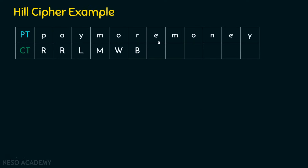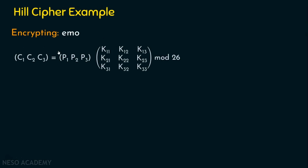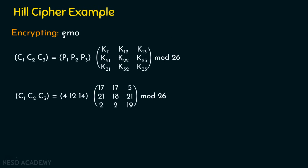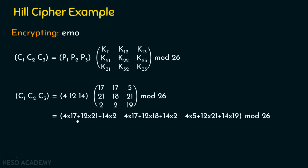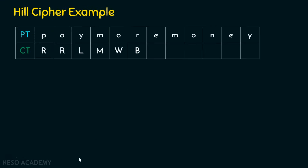Encrypting EMO (E=4, M=12, O=14): Performing the matrix multiplication with the key and applying mod 26, we get the values 10, 0, 18, which correspond to K, A, S. So plaintext EMO is encrypted as KAS.